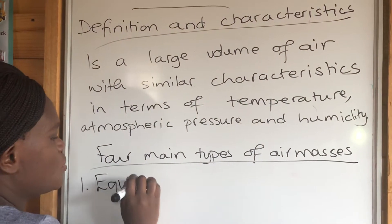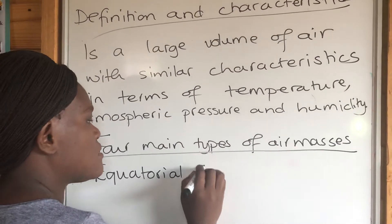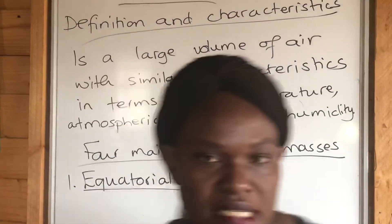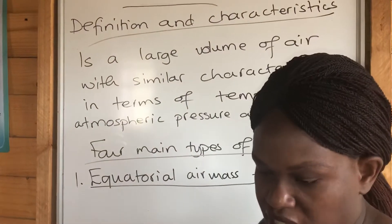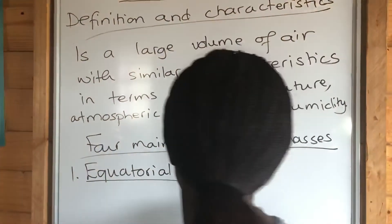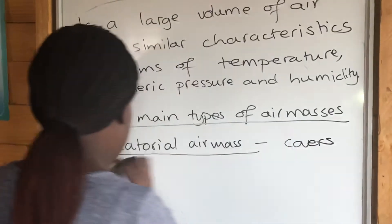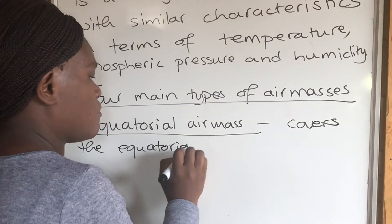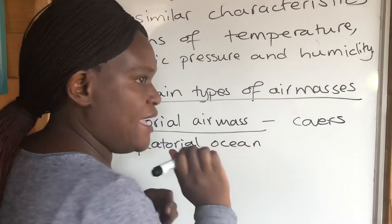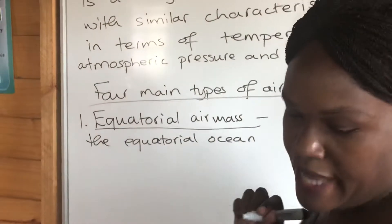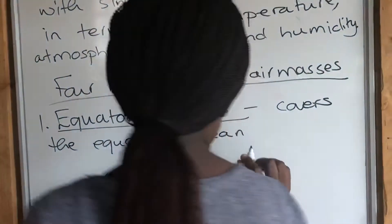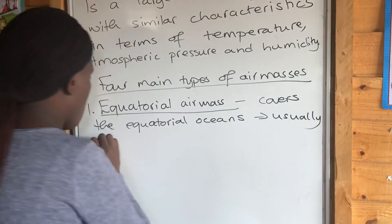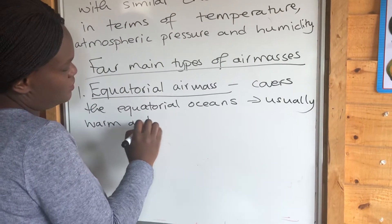First, we have what is known as the equatorial AMS. As the name suggests, the equatorial AMS covers the equatorial oceans. In terms of its characteristics, it is usually warm and moist.